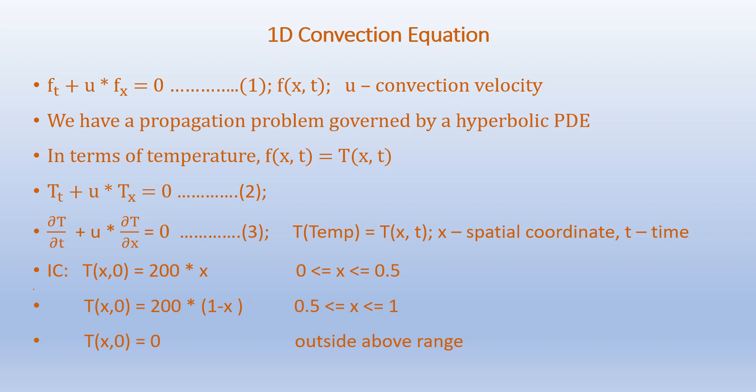If we represent f in terms of temperature T, we have: ∂T/∂t + u·(∂T/∂x) = 0, as shown in Equation 2. Here, T represents temperature as a function of x, and lowercase t represents time. The initial conditions are: T(x, 0) = 200x for x from 0 to 0.5; T(x, 0) = 200(1 − x) for x from 0.5 to 1; and T(x, 0) = 0 outside this range.